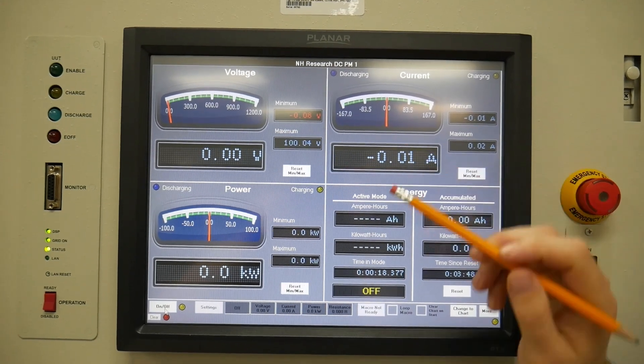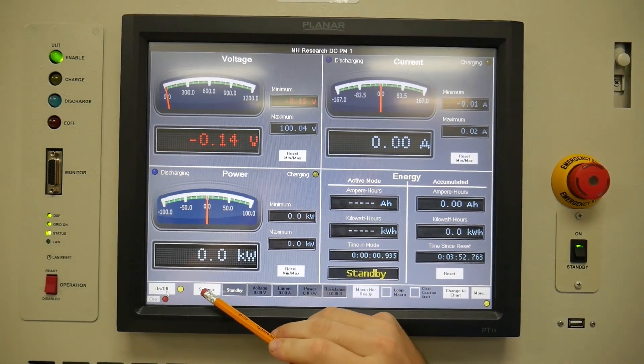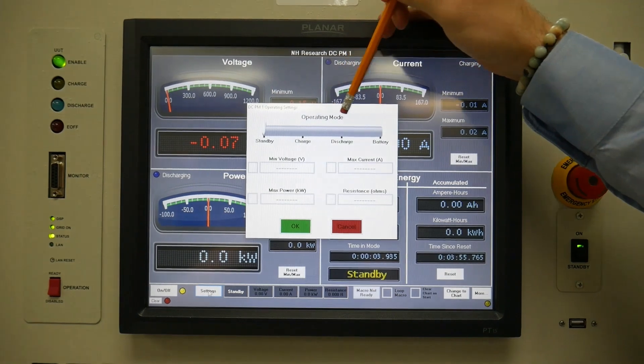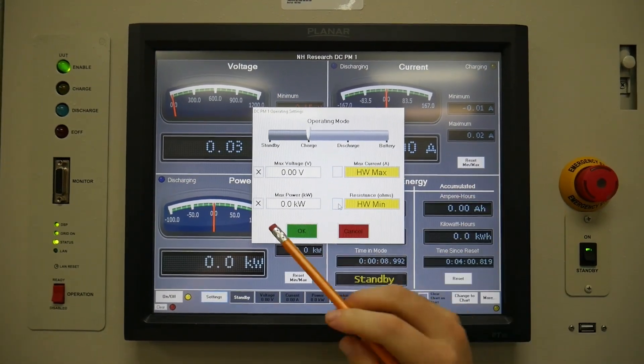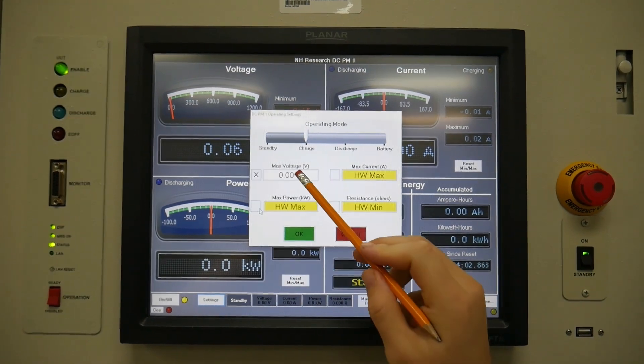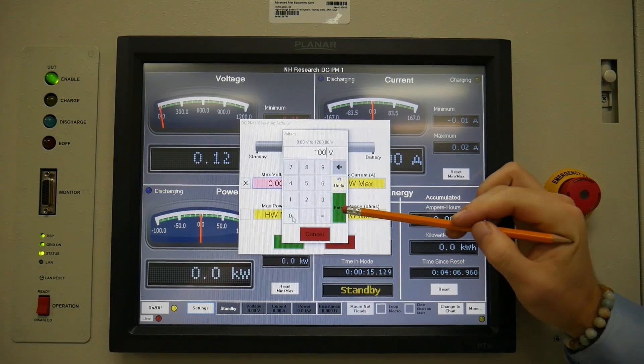To place the unit in charge you would hit settings and change the operating mode to charge. Here we are controlling the current draw through an external DC load at 100 volts. Limits will vary and are dependent on your DUT test and specs.